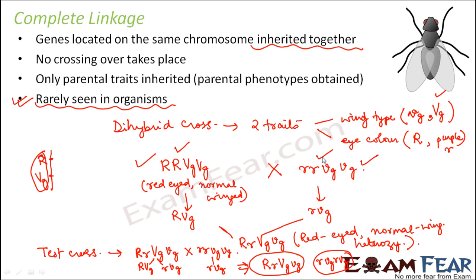This is an example of complete linkage. However, complete linkage is very rare — most organisms show incomplete linkage where recombinants are also formed. For example, in human beings we get recombinants, and that is why you see new traits in children — that is all because of recombination.